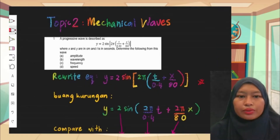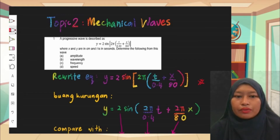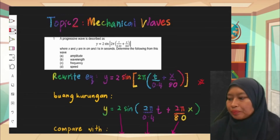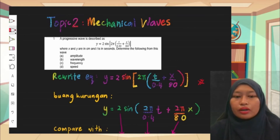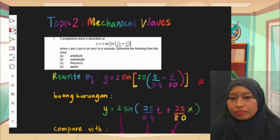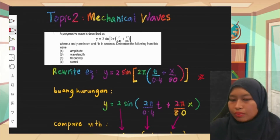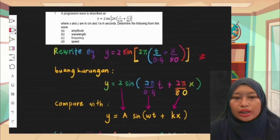Let's see number one. A progressive wave is described as y equals to 2 sine(2πt/0.4 + πx/18), where x and y are in cm and t is in seconds. Determine the amplitude, wavelength, frequency, and speed. When we get this type of question, the first step is to rewrite the equation and then expand the brackets, so we get y = 2 sine(2π/0.4 + 2π/80 · x).